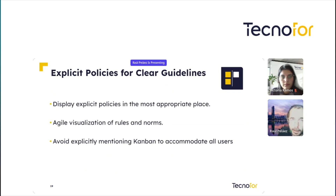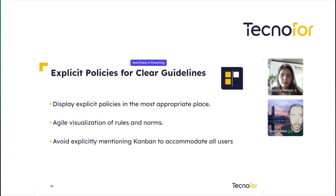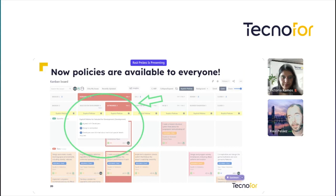We can also add explicit policies for clear guidelines. I'm talking about displaying explicit policies in the most appropriate place — in the header of the columns. The agile visualization of rules and norms is inside the board, and we can avoid explicitly mentioning Kanban to accommodate all users. Even if your team doesn't know anything about Kanban, it's easy to understand: you just need to move your task to the next column. The policies can be configured by board admins and shared between teams, and can be edited from this header.